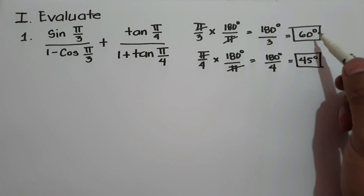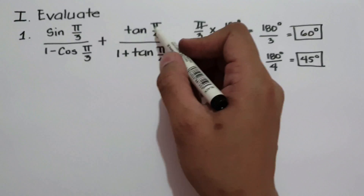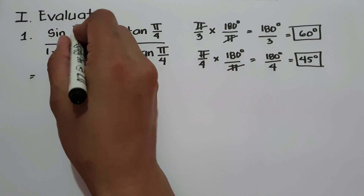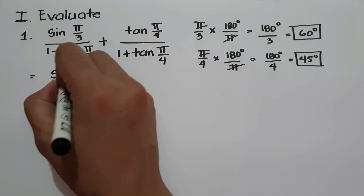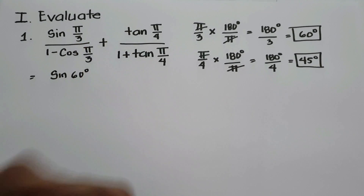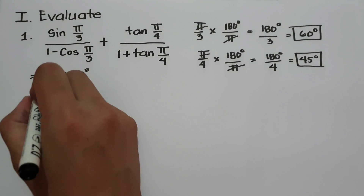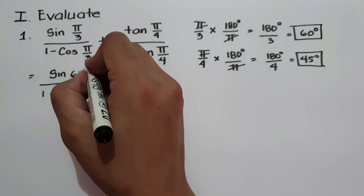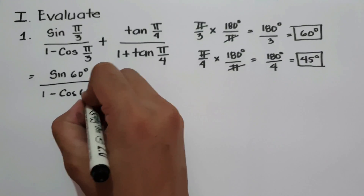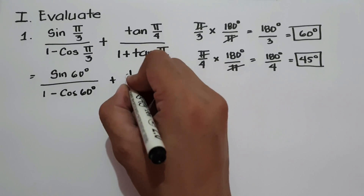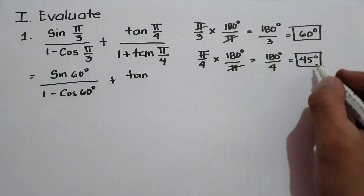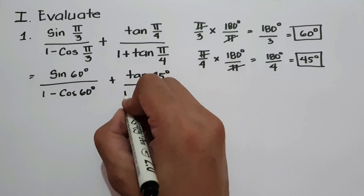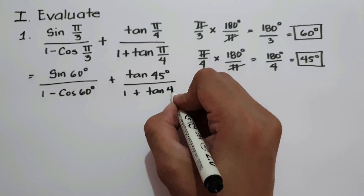Now let us substitute the values of π/3 and π/4 in degrees. Since we have sin(π/3), we are going to have sin 60 degrees divided by 1 minus cosine 60 degrees, plus tangent 45 degrees divided by 1 plus tangent 45 degrees.